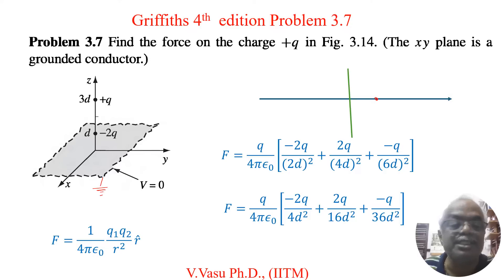We have kept a charge minus 2Q at the distance d from the center. Similarly, we are placing a charge plus Q at the distance 3d from the conductor. So this is the grounded conductor. This potential must be 0.